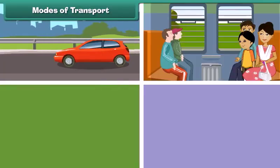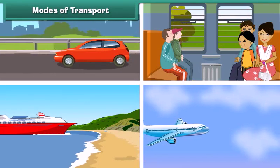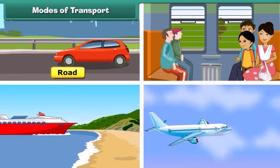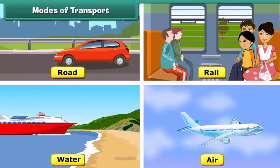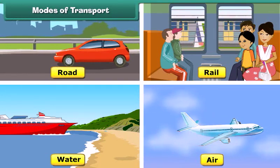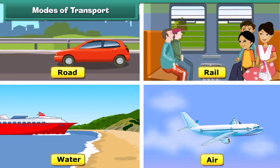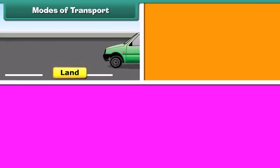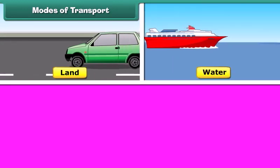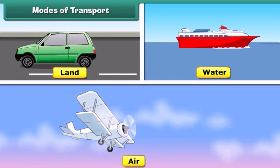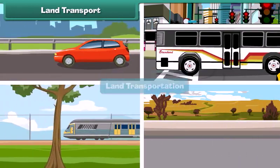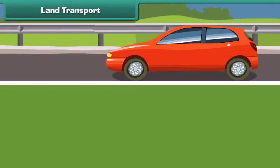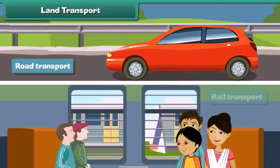Modes of transport can be broadly divided into three categories: land transport, water transport, and air transport. The movement of goods and passengers on land is known as land transport. Land transport can be divided into road transport and rail transport.